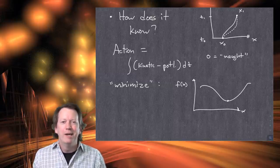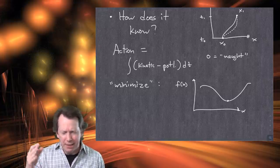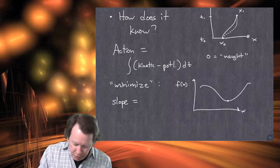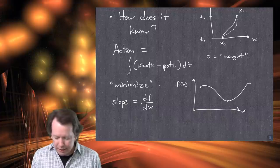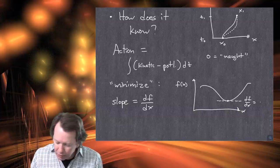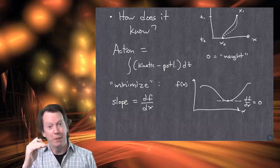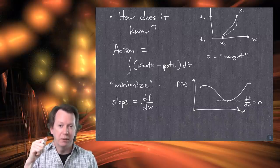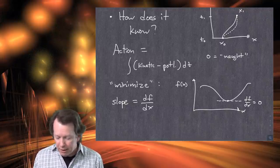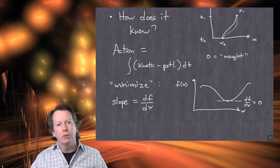You and I can see where the minimum is just by looking, but how would we mathematically figure out where the minimum is? The slope of that curve is the derivative — the change in f as we change x. At the minimum, the slope df/dx equals zero. That's the mathematical way of saying where the minimum is. To solve for the minimum mathematically: take the function f, differentiate it, find its derivative, set the derivative equal to zero, and solve that equation.